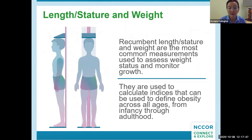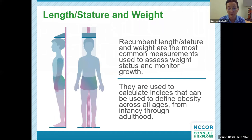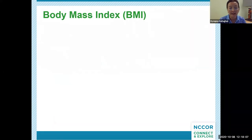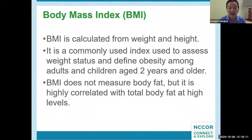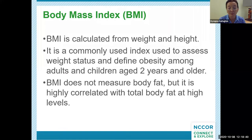Recumbent length, stature, and weight are the most common measurements used to assess weight status and monitoring of growth. They're often used to calculate indices that can be used to define obesity across all ages from infancy through adulthood. Body mass index, or BMI, is calculated from weight and height as weight per height squared, expressed in kilograms per meter squared. BMI is a common index used to assess weight status and define obesity among adults and children aged two years and older. Although BMI does not measure body fat directly, it is highly correlated with total body fat at higher levels, and values above a specific cut point are used to define obesity or excess adiposity.